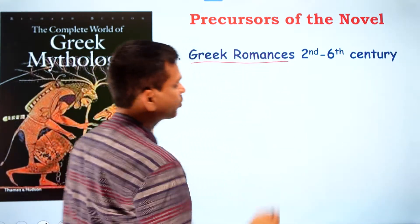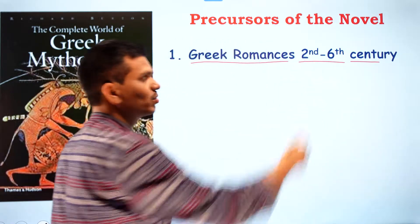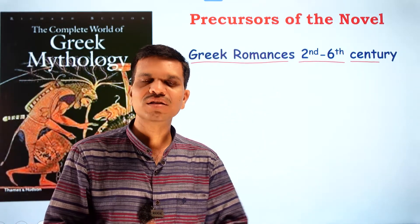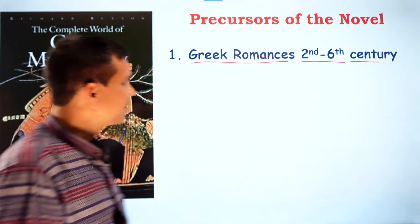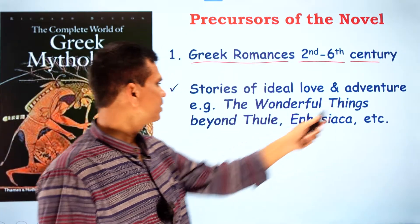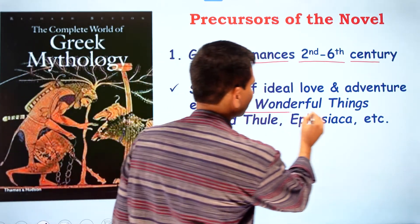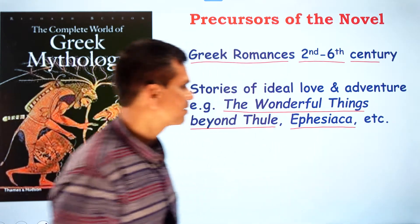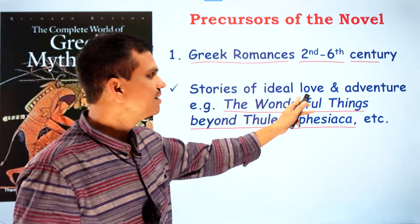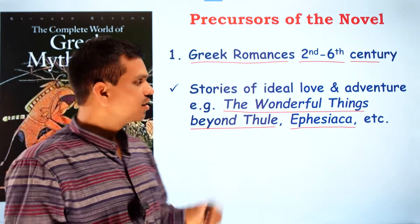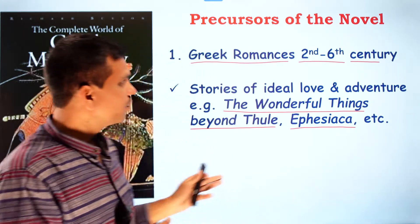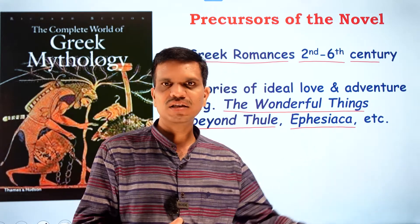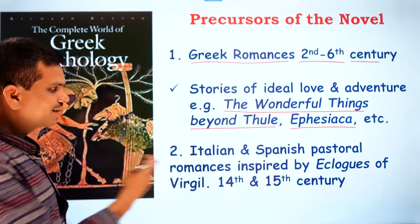The very first precursor is Greek romances, from the second to sixth century, where we find different types of stories — particularly stories of ideal love and adventure. Examples from Greek romances include works like The Wonderful Things Beyond Thule and Ephesiaka. Based on these, later in Europe and England, adventure stories and romances developed. So Greek romances represent the origin of stories that eventually developed into full-fledged novels.